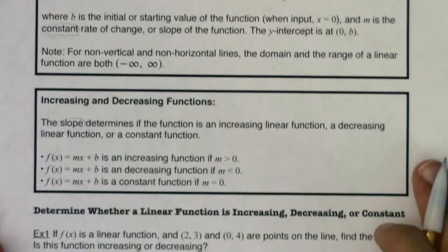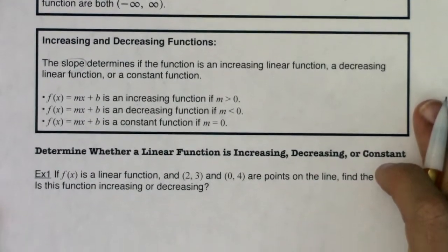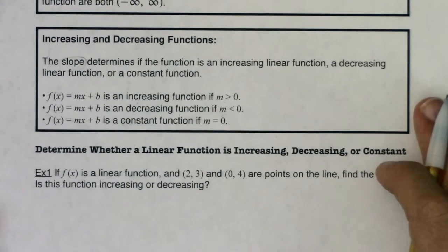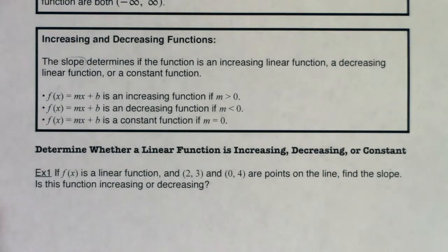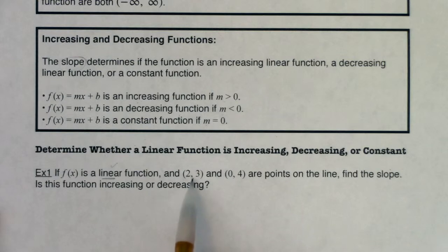So with that being said, let's try example one. It says if f of x is a linear function, so we're told it's linear, and 2, 3 and 0, 4 are points on a line. Find the slope. And then is this function increasing or decreasing, or potentially even constant?